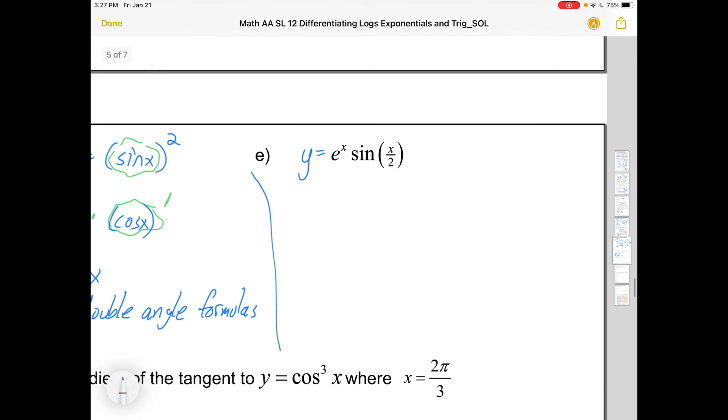So here's another one. E to the x times sine x over 2. Although it looks really pretty to have x over 2, I always like to think of this as a coefficient of a half. So when I'm thinking about this, this is a product. It's e to the x times sine of a half x. So u would be e to the x, u prime derivative of e to the x is e to the x. V would be sine of a half x, or x over 2. v prime, that's sine of a glob. So the derivative of sine of a glob is going to be cosine of that same glob times the derivative of the glob. Or v prime is a half cos of a half x. After that, it's just plug and chug in your product rule. So u prime v plus u v prime.